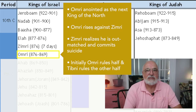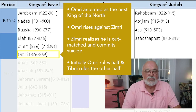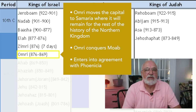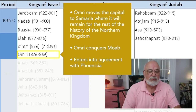Zimri's reign in the northern kingdom was only seven days. Omri will only rule over half of Israel at first because the people elect Tibni to rule over the other half, but Omri will eventually prevail and become king of all the northern kingdom. He moves the northern capital to Samaria, where it will remain for the rest of the history of the northern kingdom. Omri, as a good military leader, conquers and subdues Moab, and also enters into agreement with Phoenicia so they will be allies.